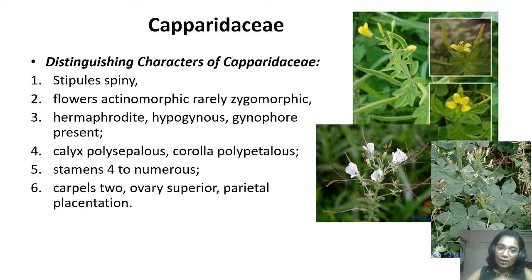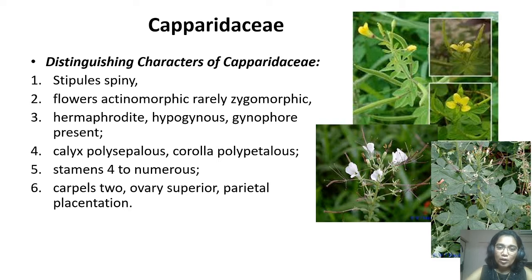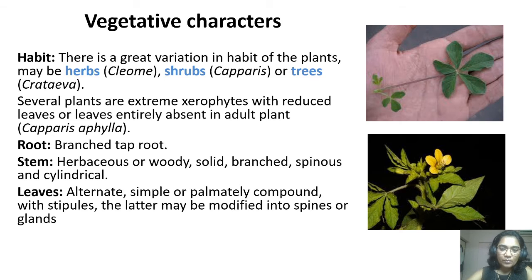In this family, androphore is also common. The plant Cleome gynandra shows gynophore as well as androphore — that is the stalk of the carpel and the stalk of the androecium. Calyx polycephalous, meaning many sepals are present, mostly four to five. Corolla polypetalous, where the petals are free. Stamens four to numerous. Carpels two, ovary superior, parietal placentation is there.